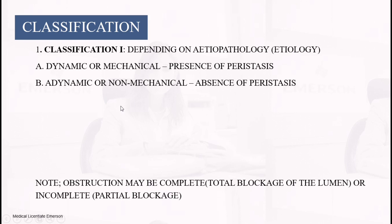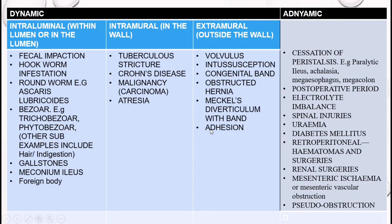There are several classification systems for intestinal obstruction. Classification one is by pathological mechanism: dynamic (mechanical) obstruction, where peristalsis is present, versus adynamic (non-mechanical), where there is absence of peristalsis. The obstruction may also be complete, with total blockage of the lumen, or incomplete, where there is partial blockage.